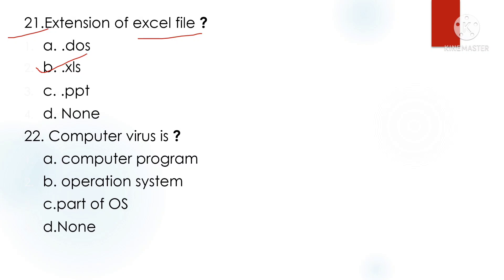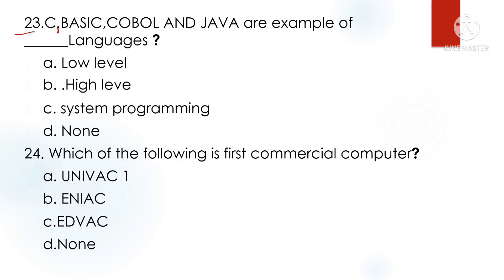Computer virus: a computer virus is a program — it is not an operating system or part of the OS; it is a malicious program. Question: C, BASIC, COBOL, and Java are examples of high-level language.